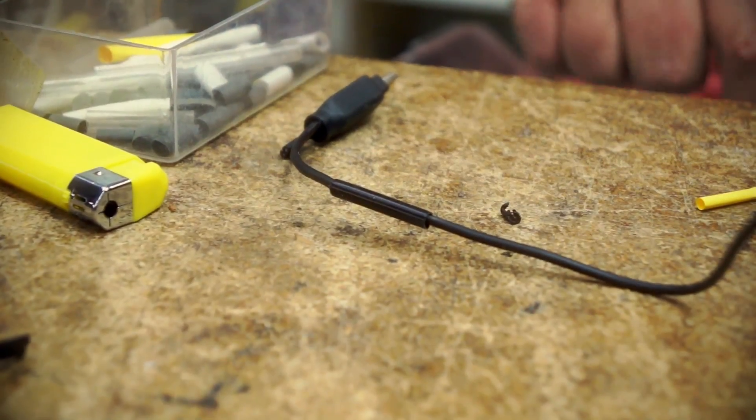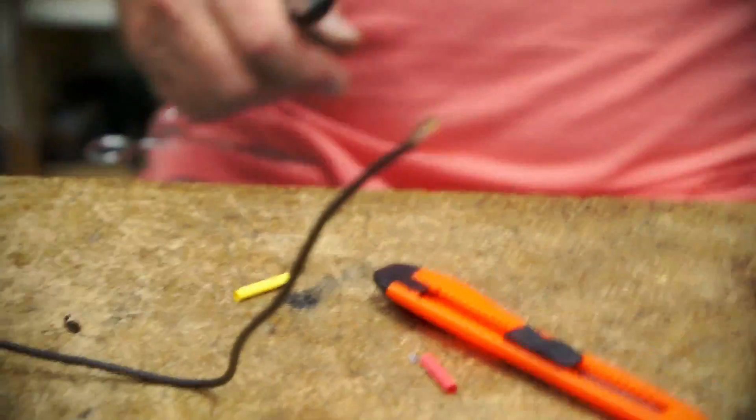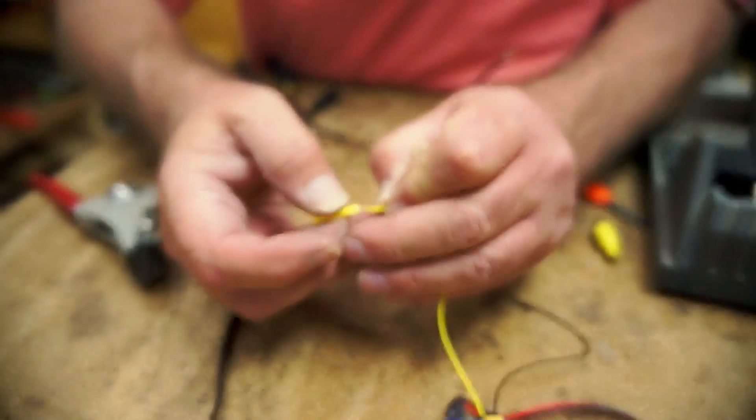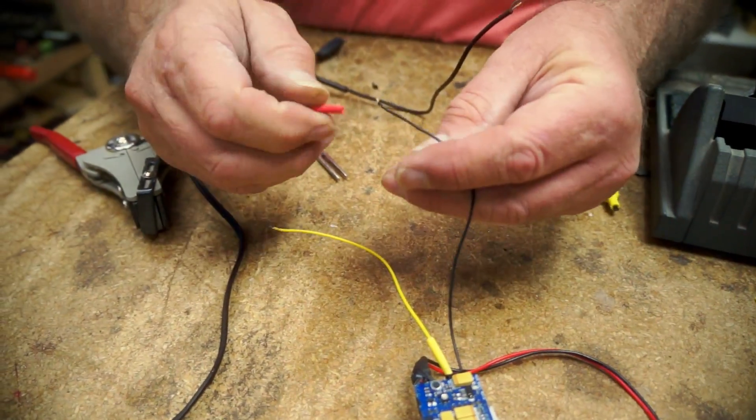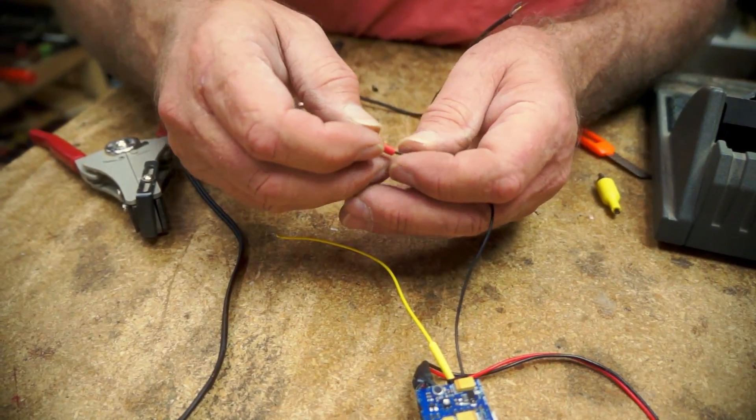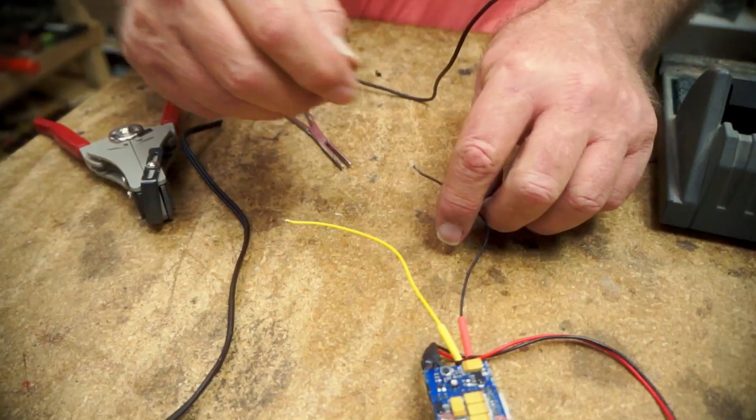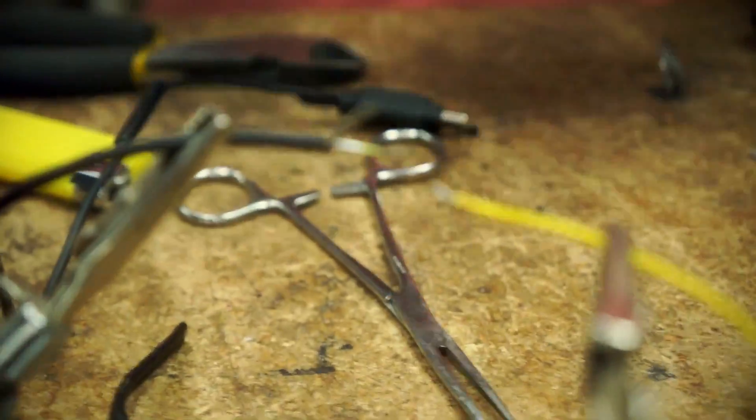We put the heat shrink on before we do any soldering. Always good to remember. I'm putting the red on the ground just because I'm out of black. It doesn't signify. I think I'm going to get it all wrapped inside anyway. We're going to tin the wires a little bit.